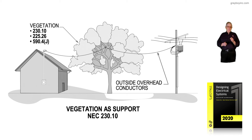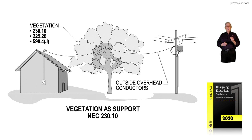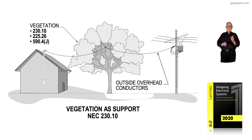To get a good handle on this, read and review 230.10 for services. For feeder conductors, refer to 225.26. For construction purposes, go to 490.4(J) and search out these requirements based on whether it's overhead service conductors or overhead feeder conductors used for construction purposes. Figure 6-11 basically deals with vegetation used as supports in accordance with 230.10, which is prohibited.